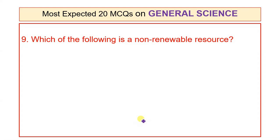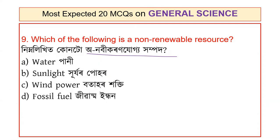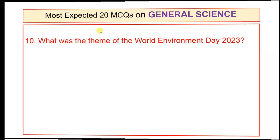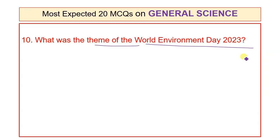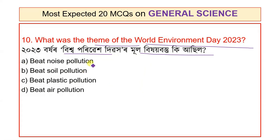Question 9: Which of the following is a non-renewable resource? Question 10: What is the theme of World Environment Day 2023? Options: Noise pollution, Soil pollution, Plastic pollution, Air pollution. The answer is Plastic pollution.